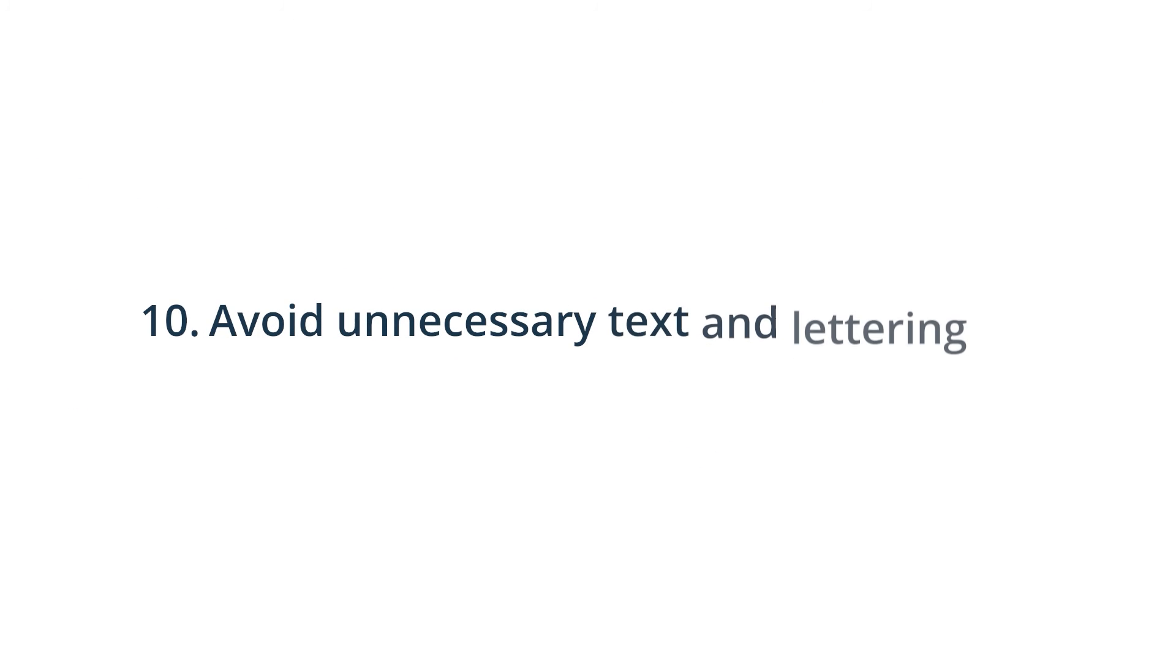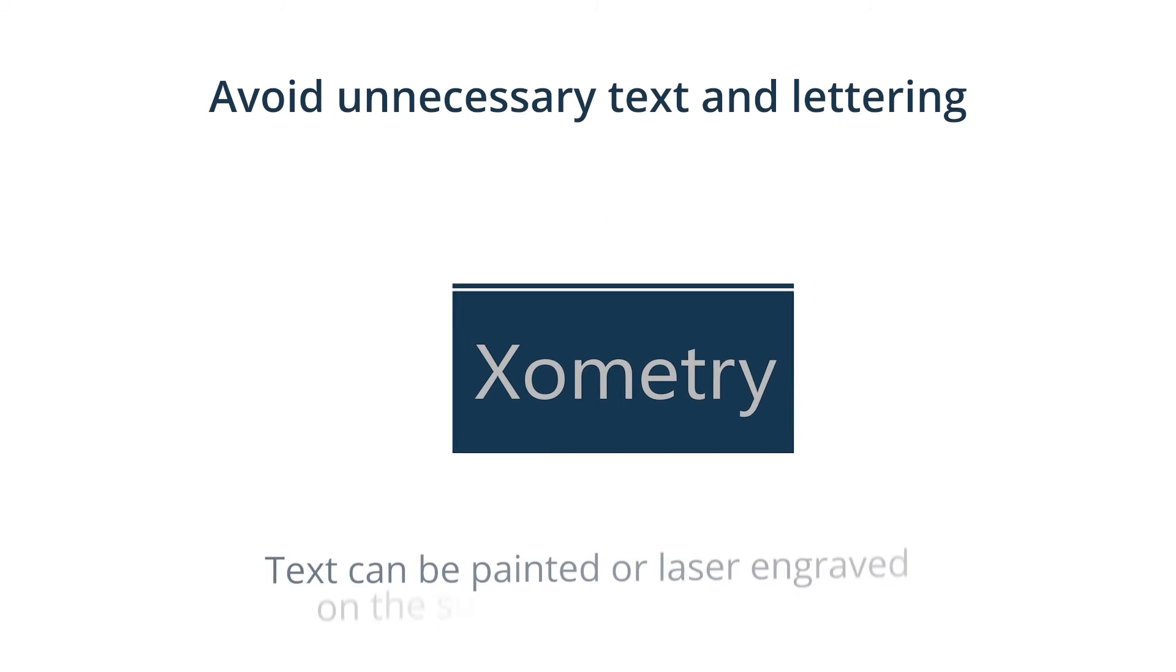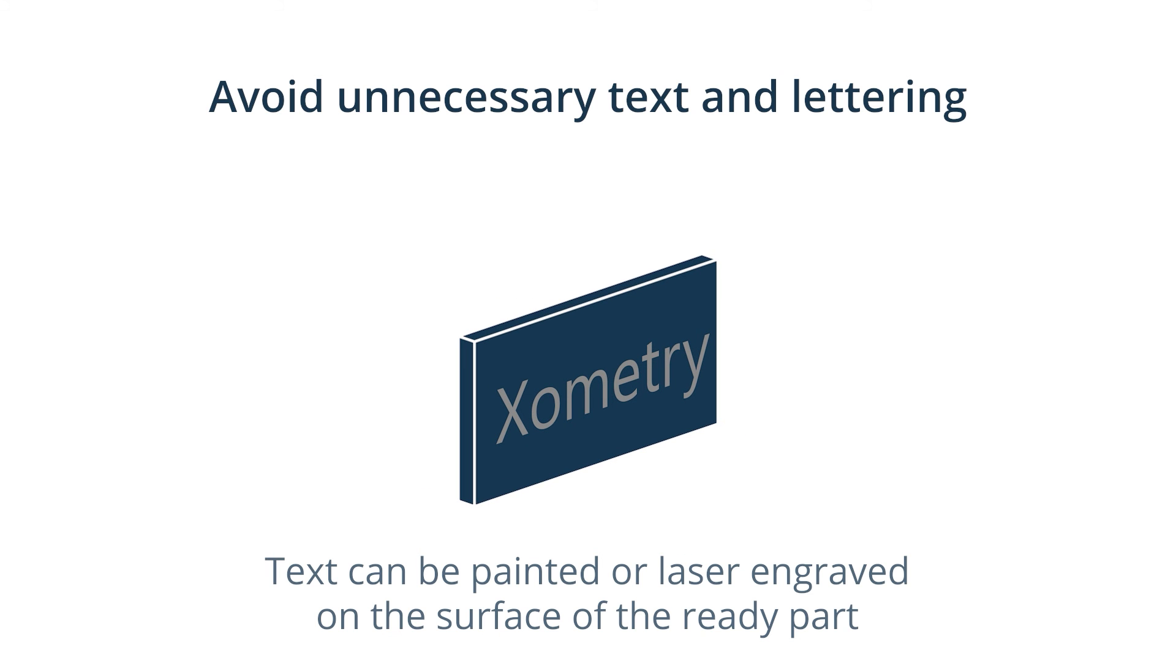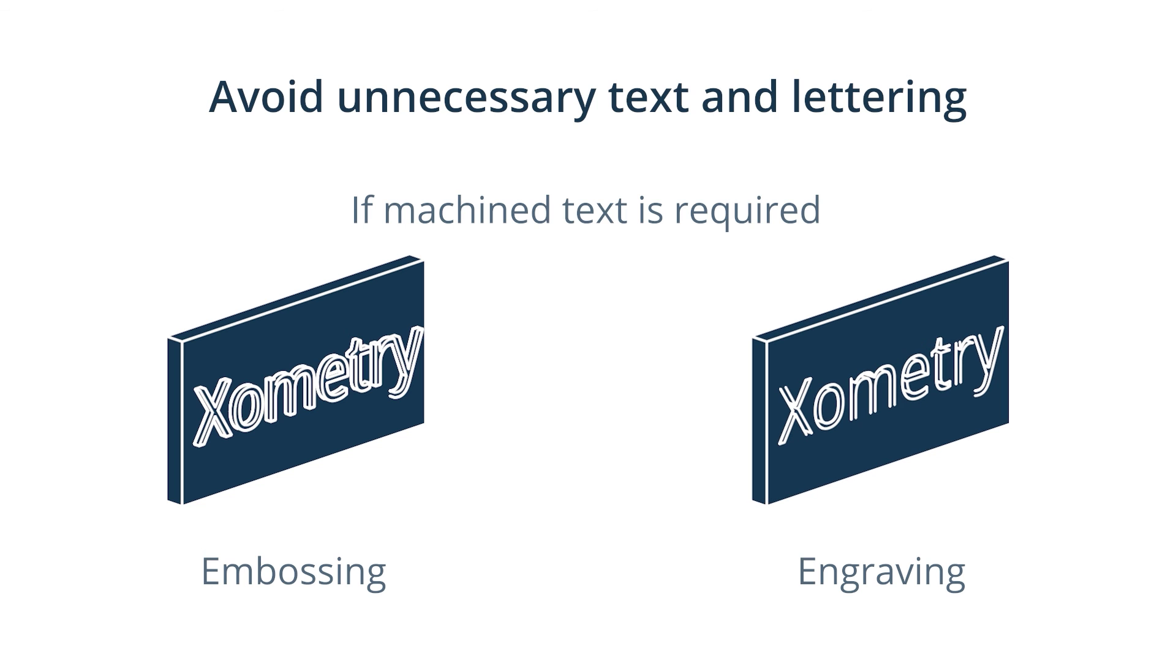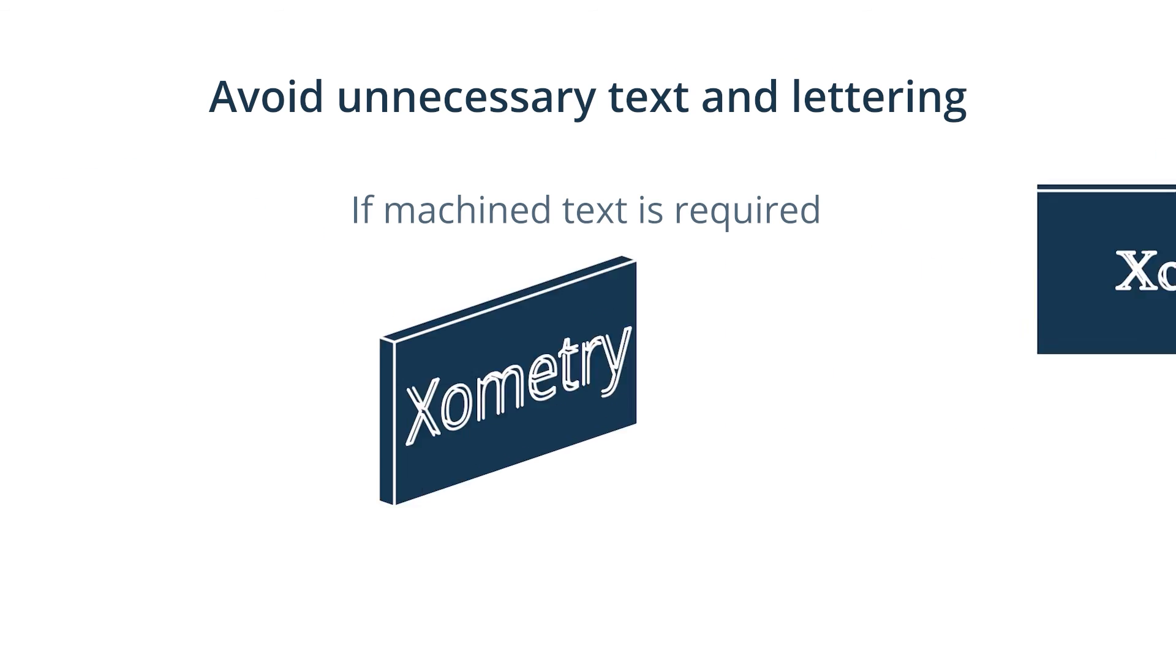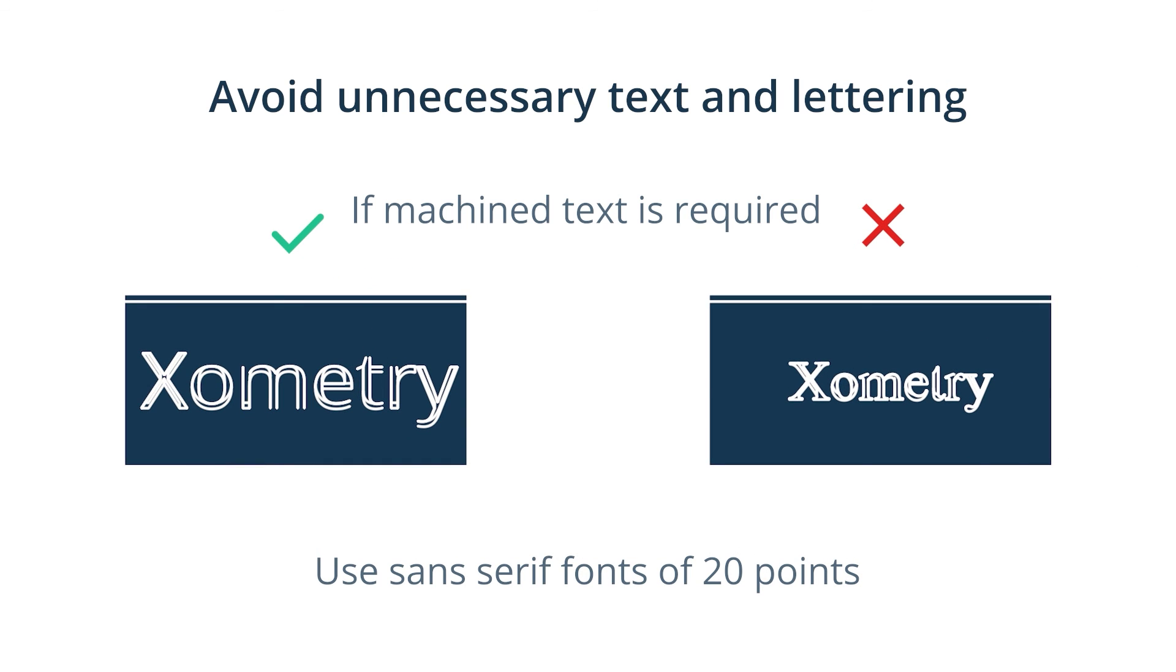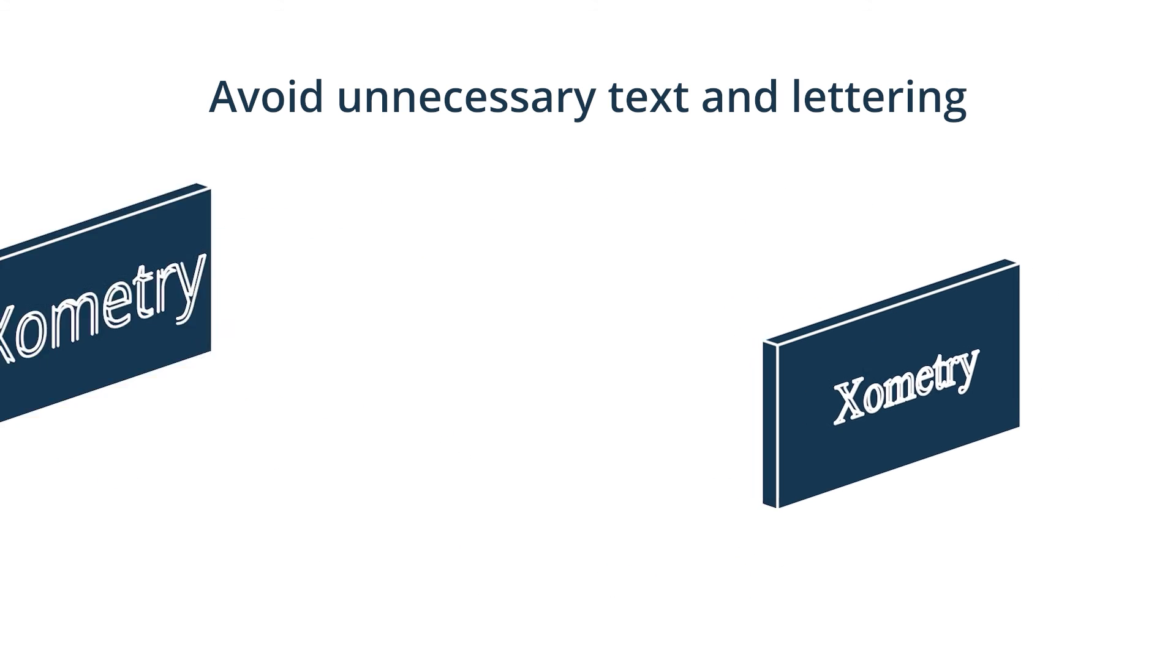10. Avoid unnecessary text and lettering. Any required text can be painted or laser engraved on the surface of the machined part during the finishing process. If machined text is required, adhere to the following rules. Choose engraving instead of embossing. This way, less material is removed. Use 20-point Sans Serif fonts to help keep costs low. Also, many CNC machines are already programmed for these fonts.